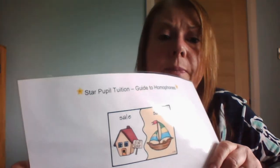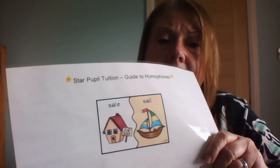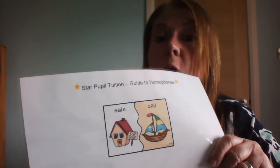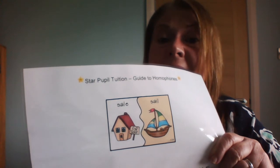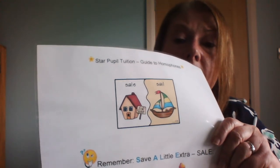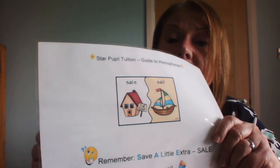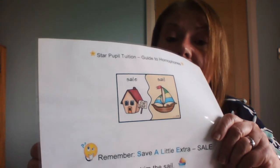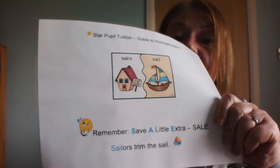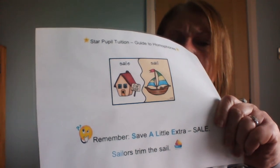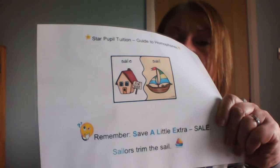The next pair is SALE and SAIL. S-A-L-E is 'for sale,' like a for-sale sign outside a shop or house. S-A-I-L is a sail on a boat. A little mnemonic: 'Save A Little Extra' — S-A-L-E. And for the other: 'Sailors trim the sail' — S-A-I-L-O-R-S and S-A-I-L both share that A-I.